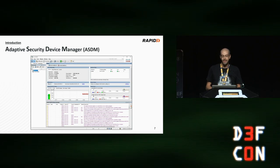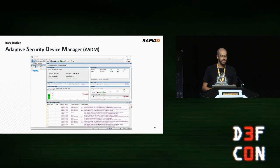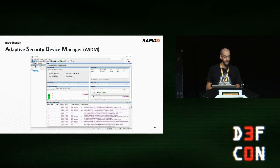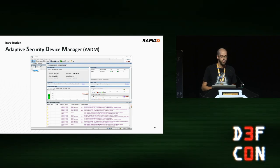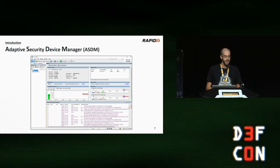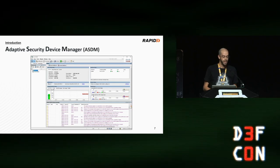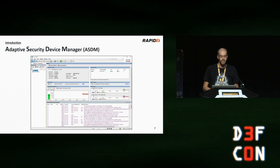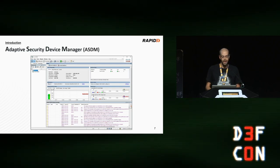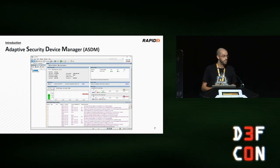All the ASA models we discussed can be managed by a thick client known as Adaptive Security Device Manager, or ASDM. ASDM is installed on an administrator's Windows system so they can remotely connect to their ASA and perform administrative tasks like updating firewall rules, adding VPN users, or simply monitoring the router's status.